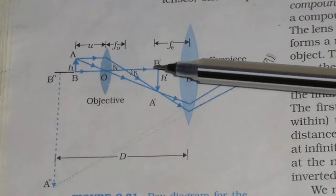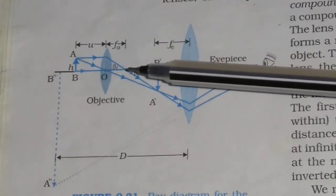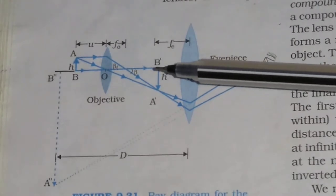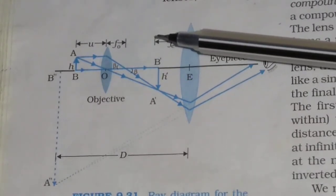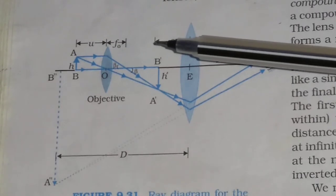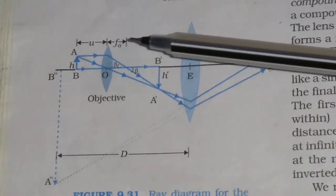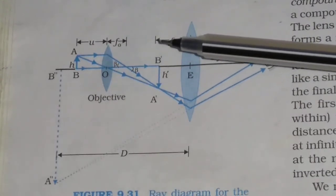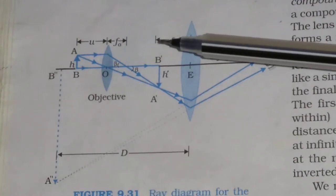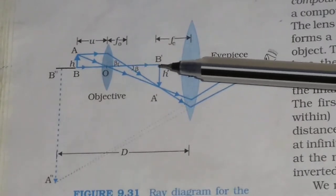This length L is the distance between the second focal point of the objective and the first focal point of the eyepiece. This is called the tube length, and it is represented by the symbol L. So from the figure, M0 = H'/H, and tan β = H/F0 = H'/L. From this equation, H/H' = F0/L.